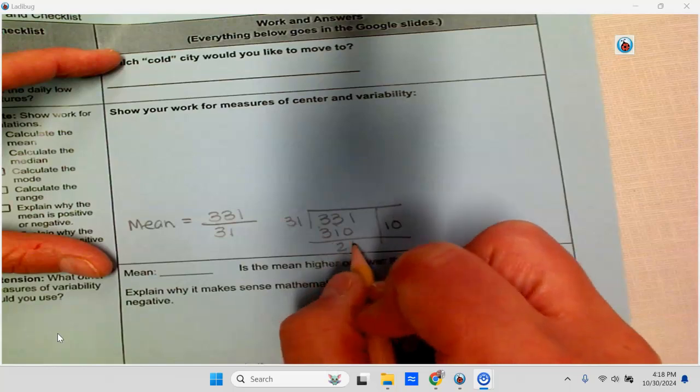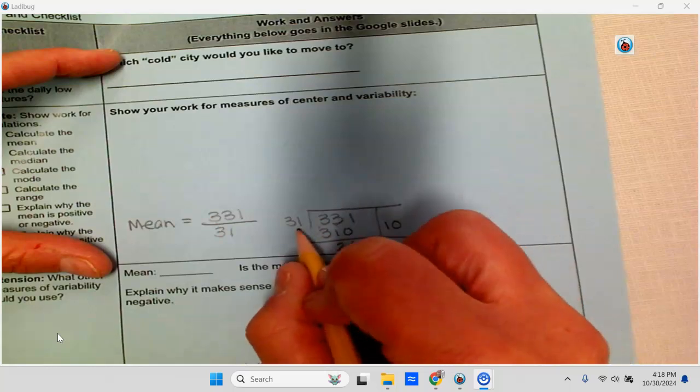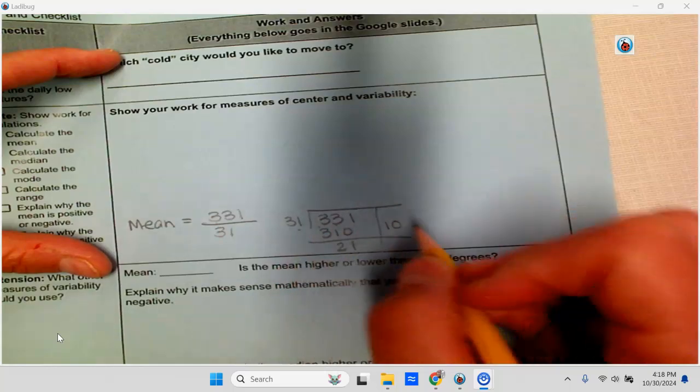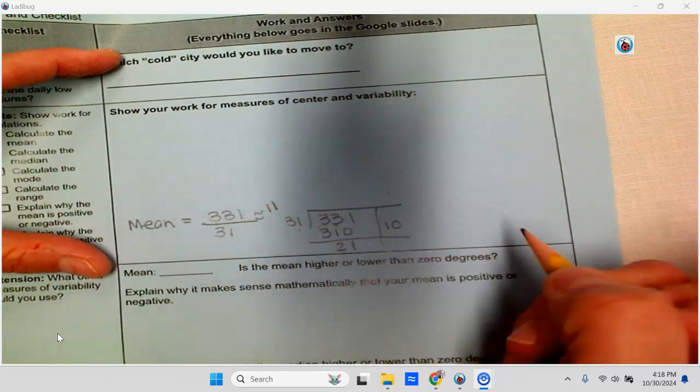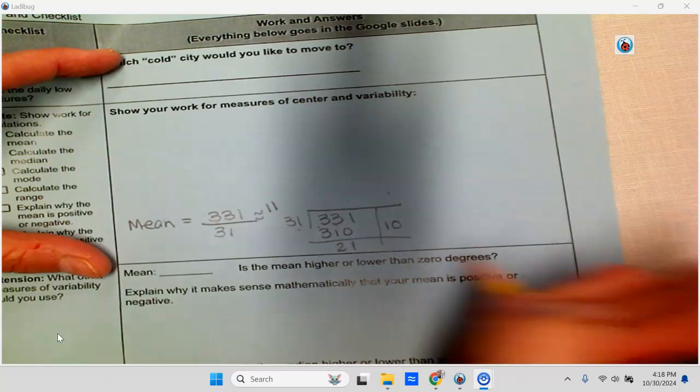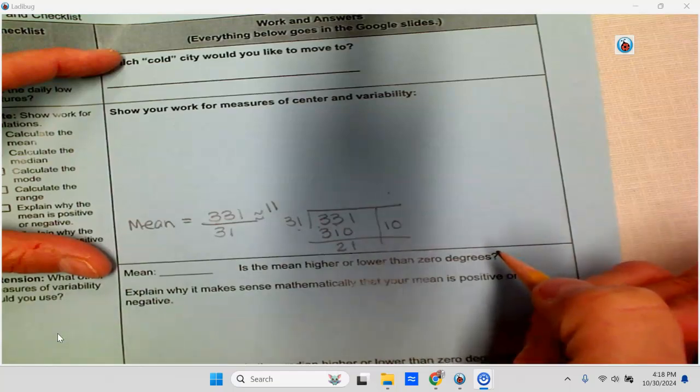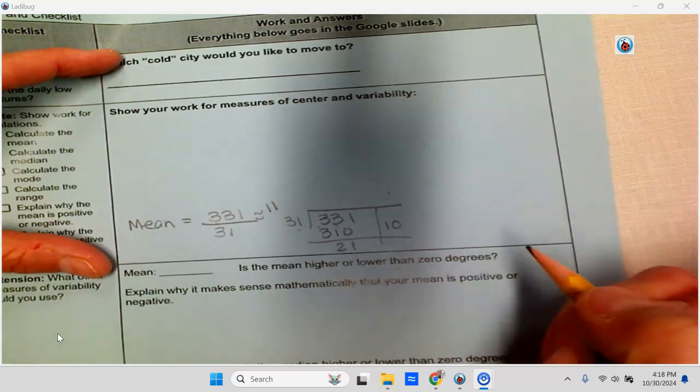So 21 is more than half of 31. So I'm going to say this is about 11. If it was less than half, I would just keep it as 10.